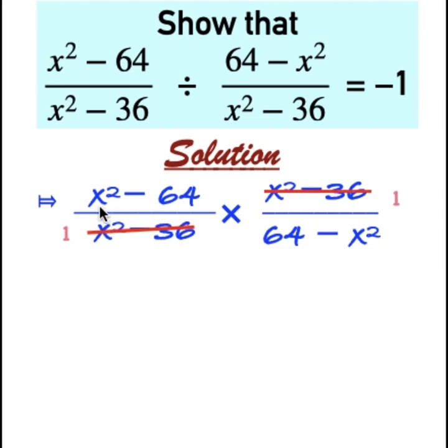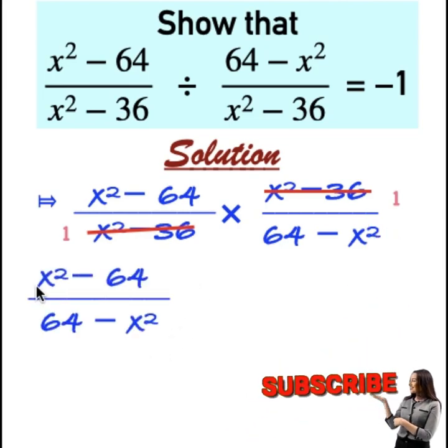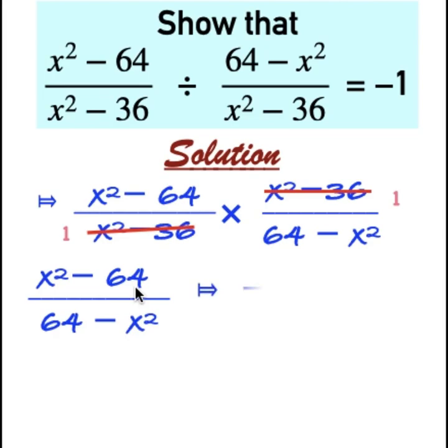What is remaining is x squared minus 64 over 64 minus x squared. We can rearrange this expression to minus 64 plus x squared over 64 minus x squared.